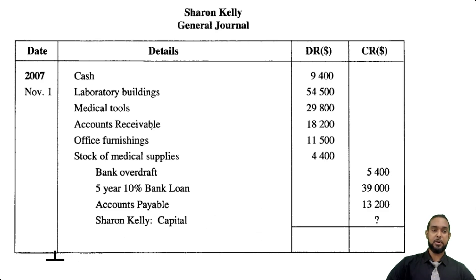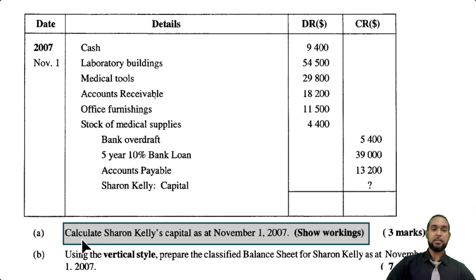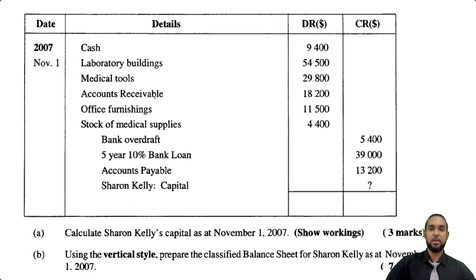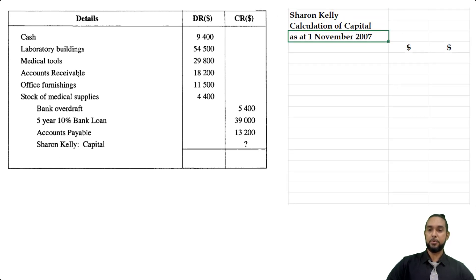The first part of the question, part A, tells us to calculate Sharon Kelly's capital as of November 1, 2007. It's just three marks. We know what that is — capital is equal to assets minus liabilities. So you can head up: Sharon Kelly, calculation of capital as of November 1, 2007.